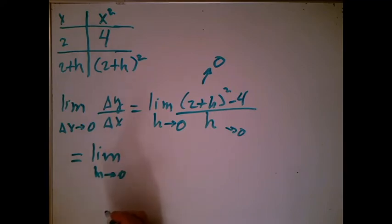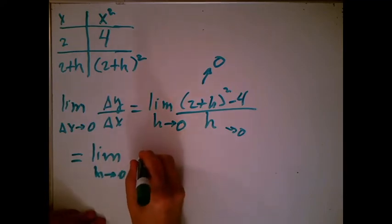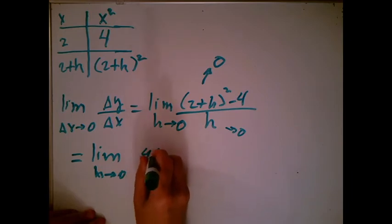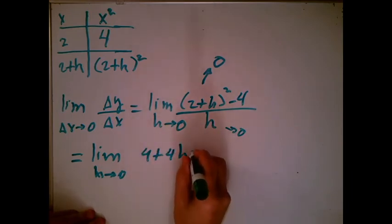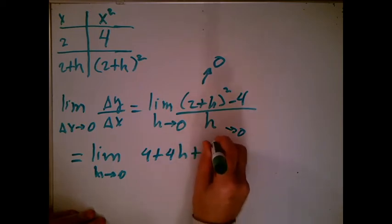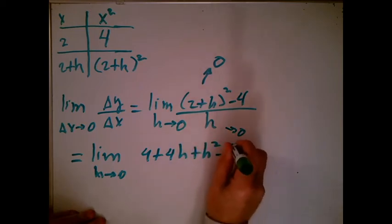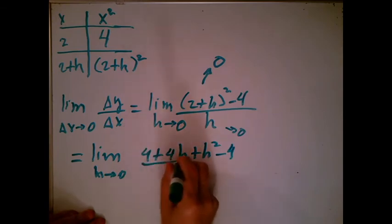And what I'm going to do is just multiply the top out. I have to FOIL that, so that's going to be 4 plus 4h plus h squared, I get minus 4, all over h.